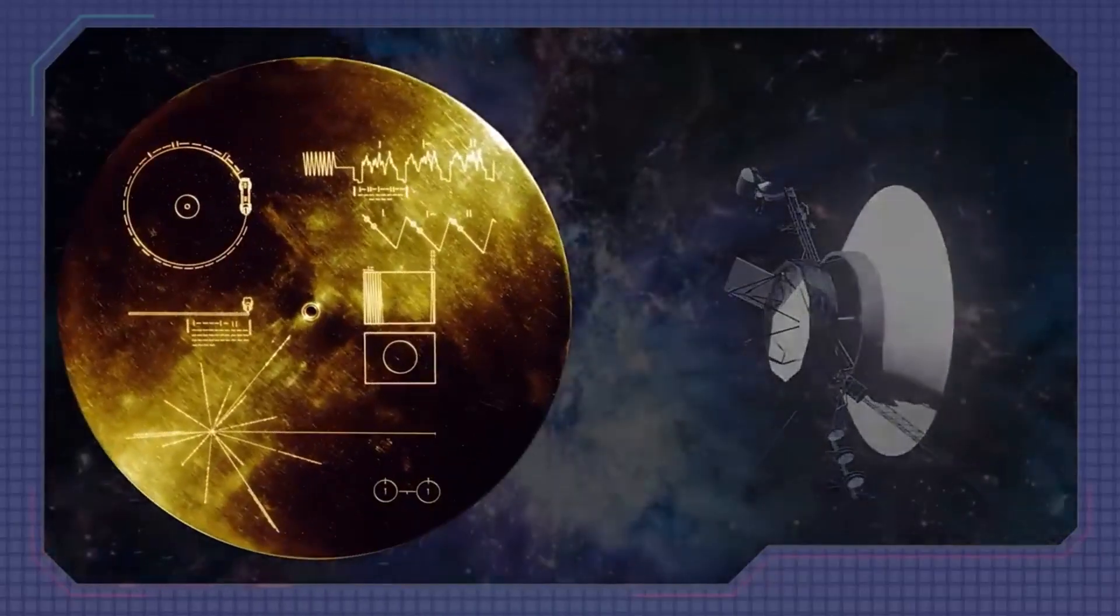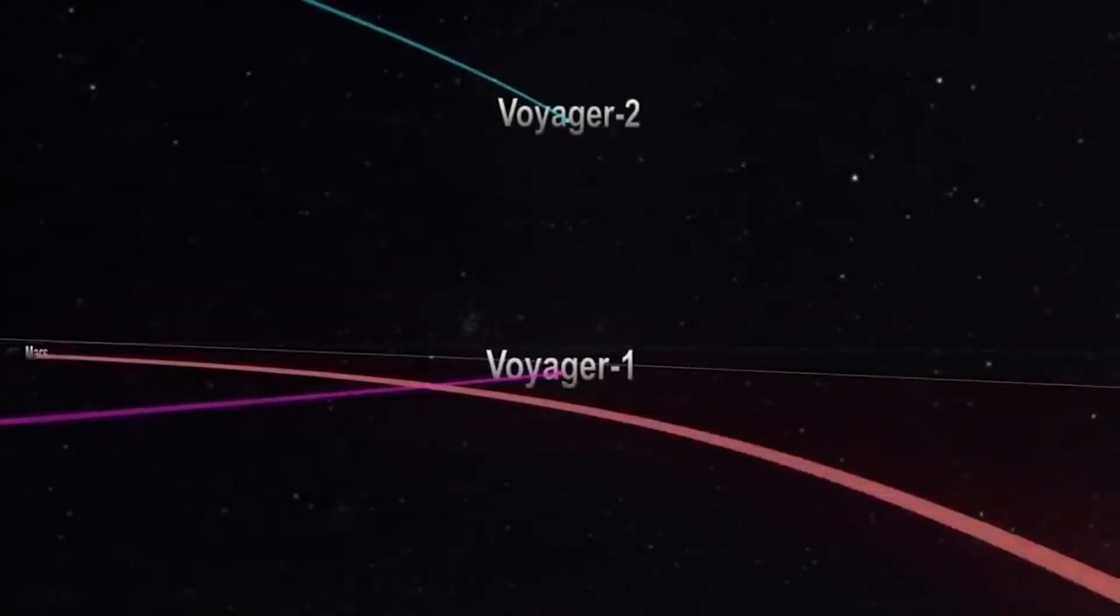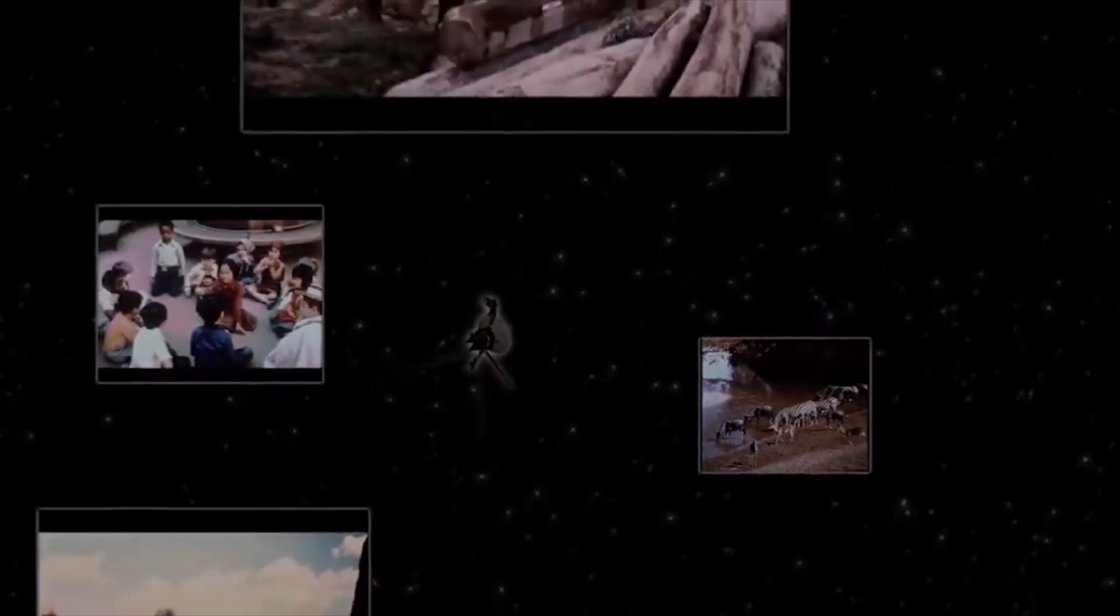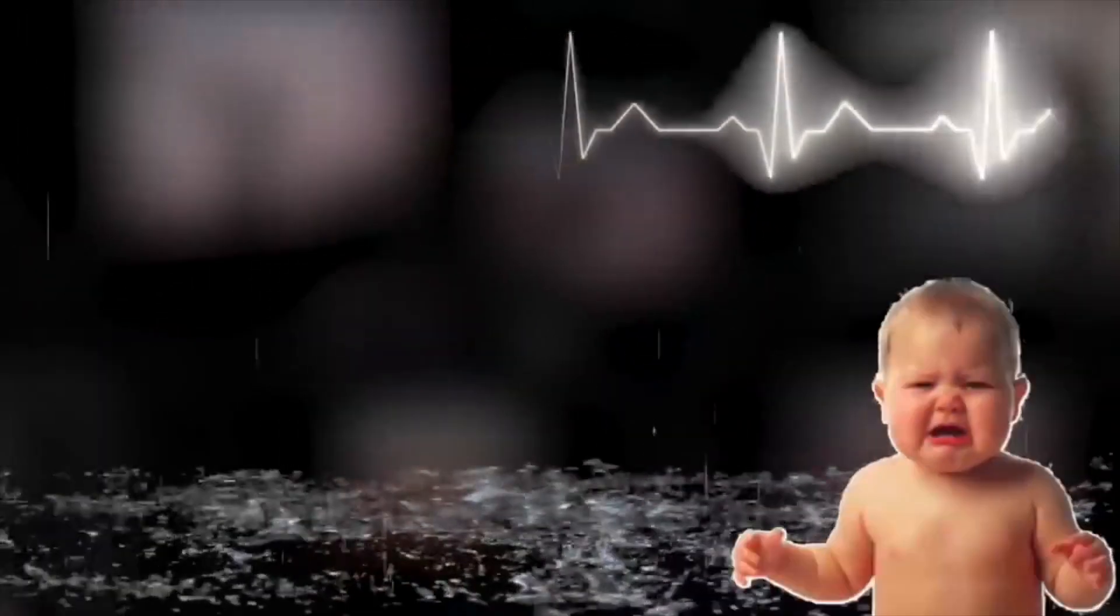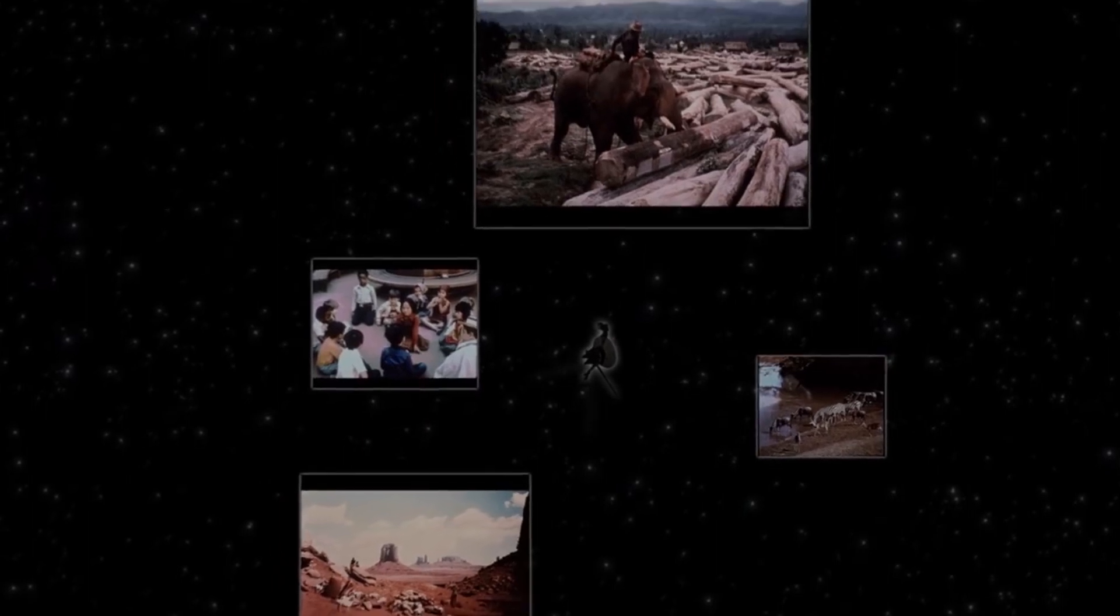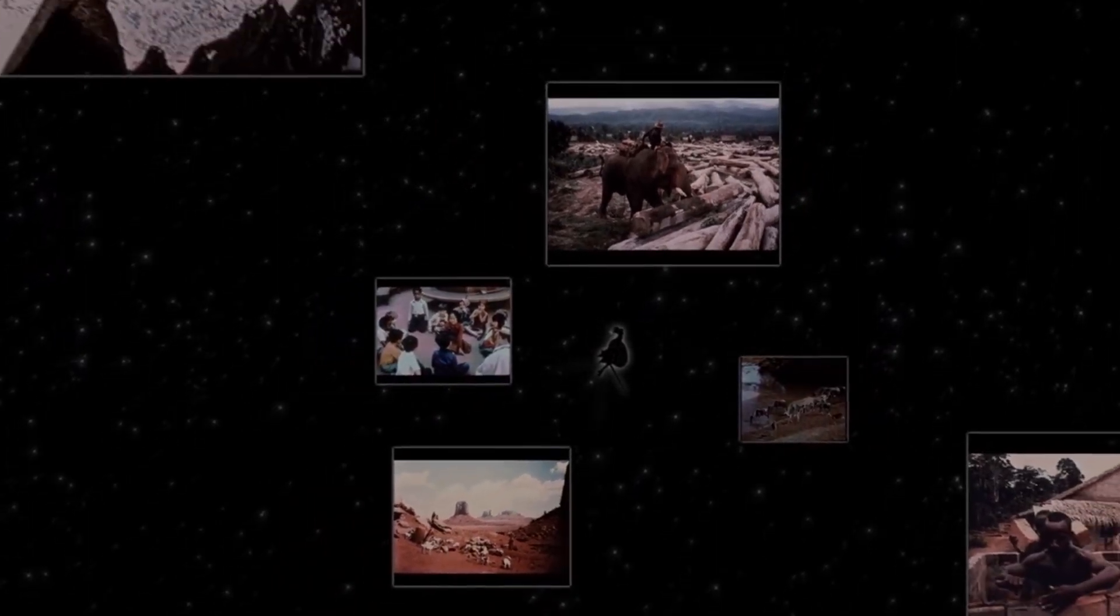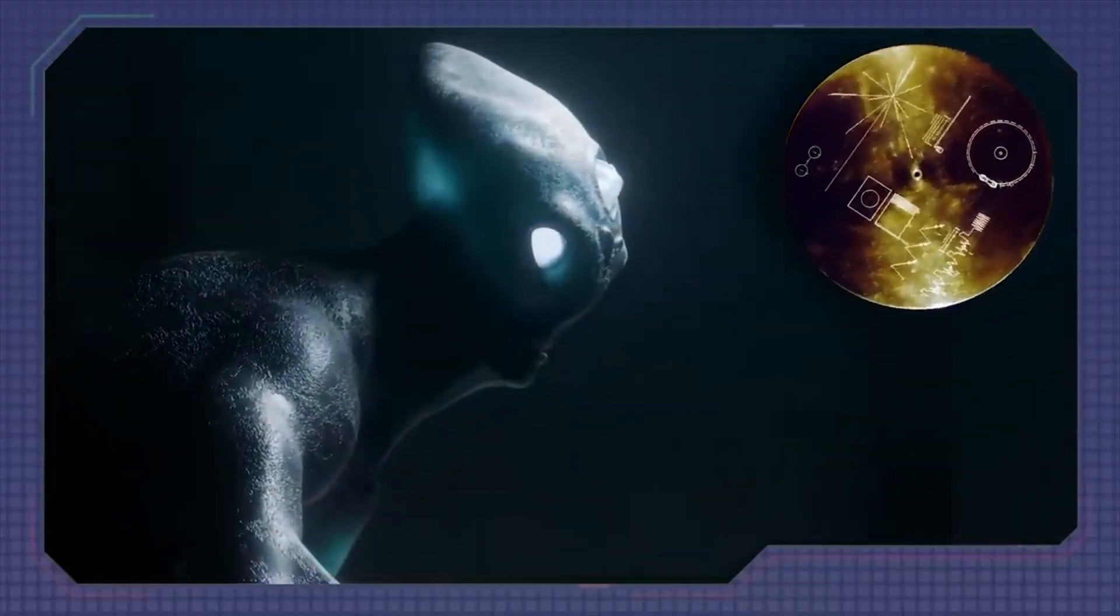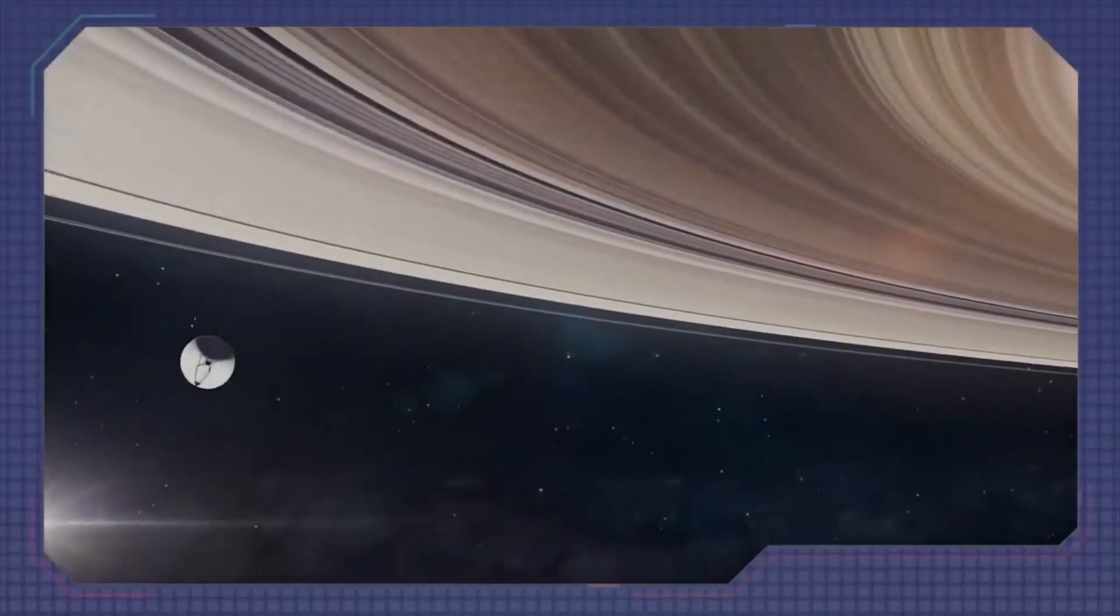The golden records carried by the Voyager probes, Voyager 1 and Voyager 2, hold the key to our shared humanity. A profound collection of sounds, they capture the crashing waves, the birdsong, and the symphony of languages from diverse cultures. These records, like a time capsule, encapsulate the essence of our planet and its inhabitants, a testament to our creativity and resilience.